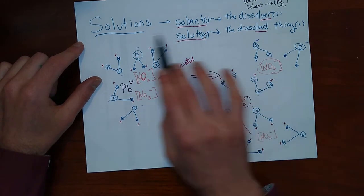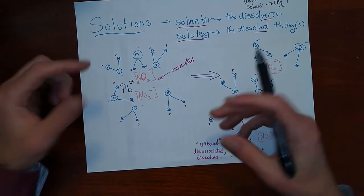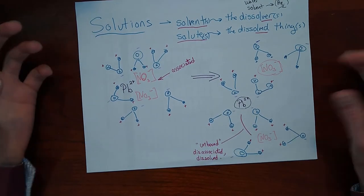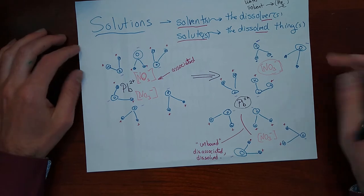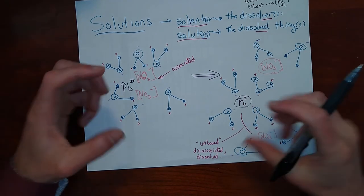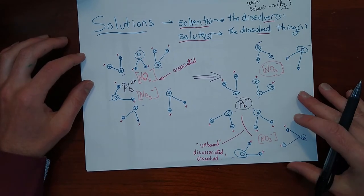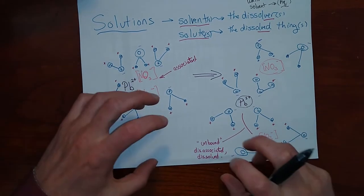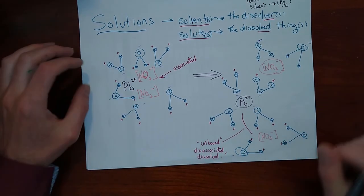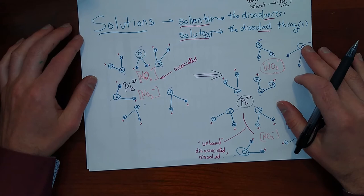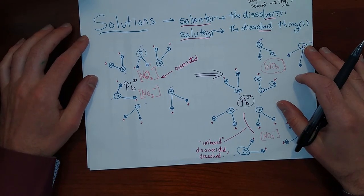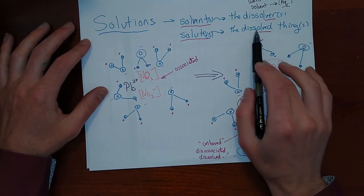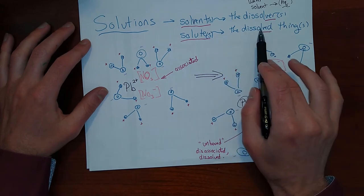'Dissolved' literally comes from the Latin 'dissolvere' — it means broken apart. If you had two things which are chained or bonded together, the solvent is going to dissolve them: it's going to unbond or unbind them from one another, breaking them apart. So the solutes are the things that are dissolved — they are the things broken apart by the solvent in the solution.